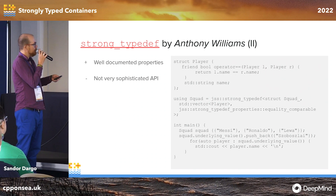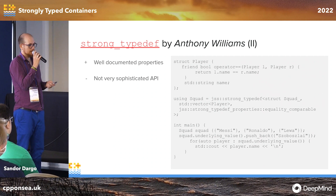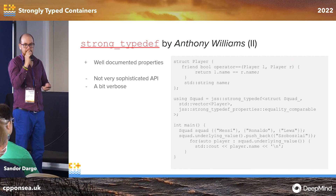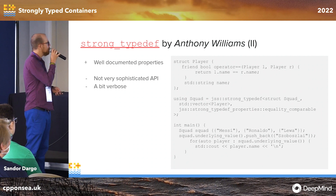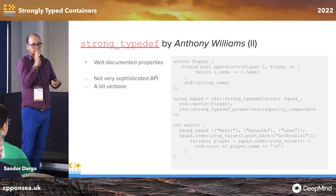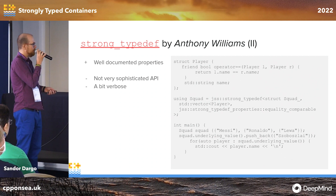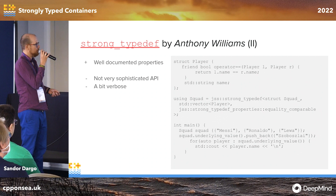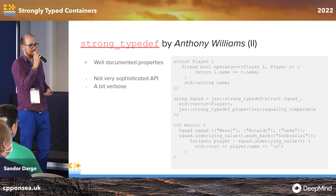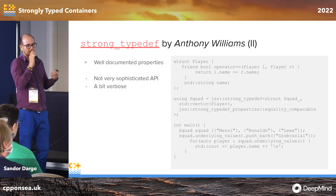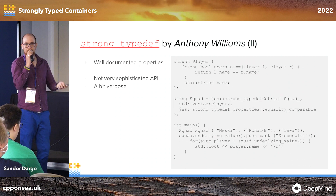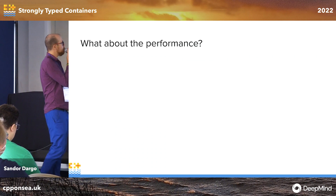Last but not least, we have strong_typedef by Anthony Williams. It resembles the previous two — named_type and strong_type. It has really extensive documentation, especially for how you write equality comparable with all the properties you can add via CRTP. That's one of strong_typedef's strong points — it has very well-documented properties. I found it a bit more verbose: 'JSS::strong_typedef_properties::equality_comparable' is something very long.